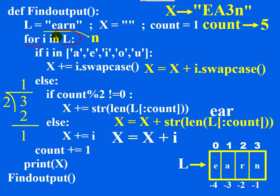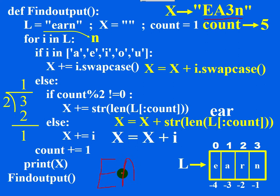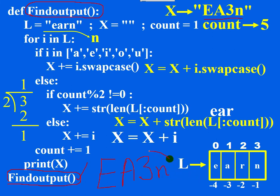No more characters are there to be retrieved, which means the for loop finishes execution. Now the control comes here: print X. What does X contain? 'EA3n'. So on the computer's monitor, you get the answer 'EA3n'. The function is completely executed. After executing a function, control returns to the point from where the function was called, and finally the program terminates. So when you run this program, the output is 'EA3n'.